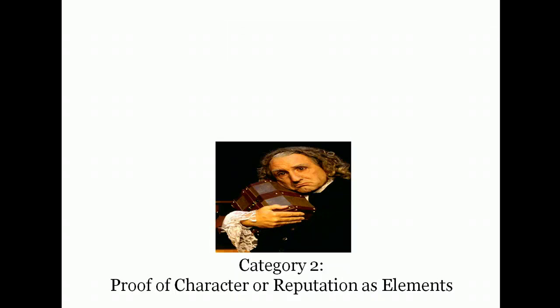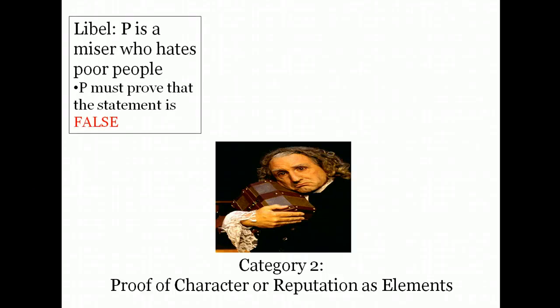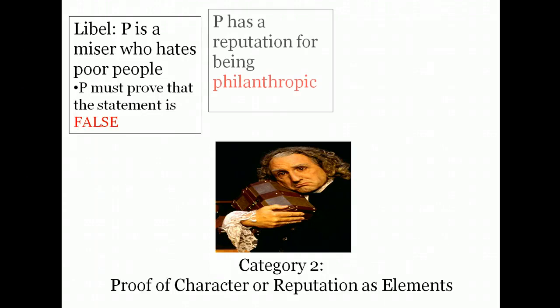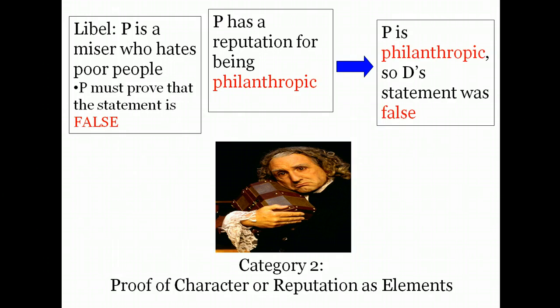Our second category is for the unusual situation where a character trait or reputation is an actual element of the claim or charge. In a few types of cases, such as defamation, a party must actually prove the character trait itself. For example, if the plaintiff brings a libel action claiming the defendant falsely said the plaintiff is a miser, the plaintiff must prove the statement was false — that is, that the plaintiff is generous. That makes the character trait of generosity an element that must be proved. Introduction of evidence that the plaintiff has a reputation for being philanthropic tends to prove he is philanthropic. This is a very narrow category governed by Rule 405b, and we'll talk about it in more detail in class.